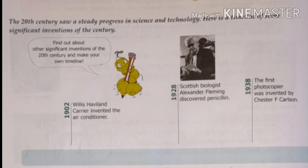The 20th century invention saw a steady progress in science and technology. Here is a timeline of some significant inventions of the century. In the 20th century there were many new things — machinery and many new inventions. Here we will study some of the famous inventions which were in the 20th century.